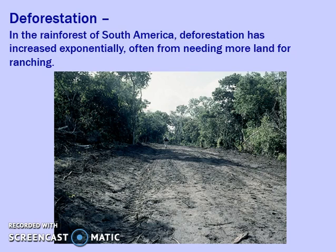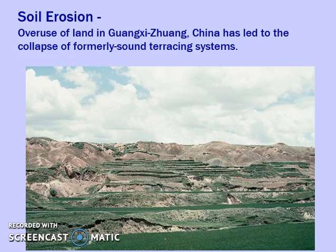This is a road in Brazil showing how we have destroyed the rainforest there. It's important to remember it's not just to create roads — it may also be to create land for ranching and grazing livestock. Cows are a major part of our diet, so we need more land for them, which means cutting down trees. This is a picture in China where you have terraced farming — steps along the side of a mountain where you can farm. But as soil erosion has occurred, it has collapsed that terraced system, and people have lost their livelihood and food.